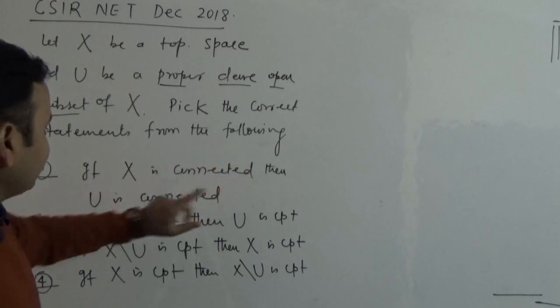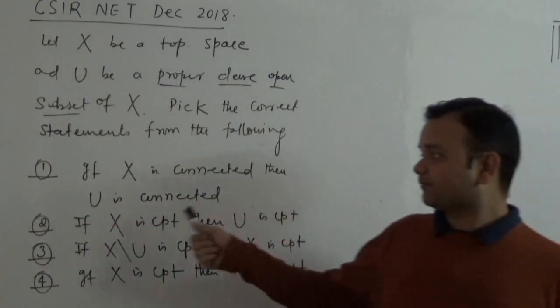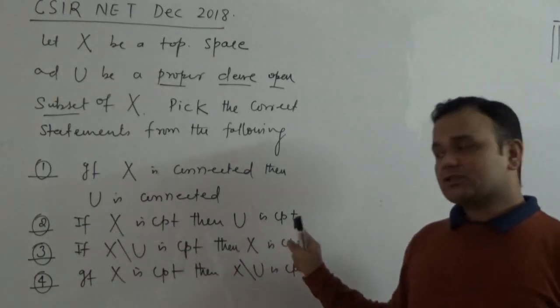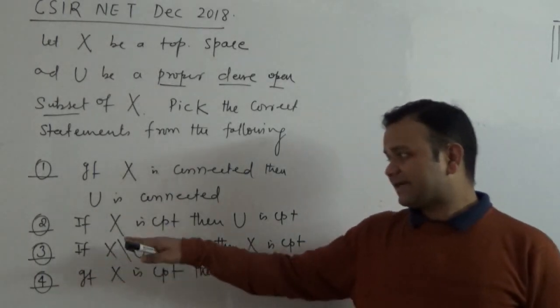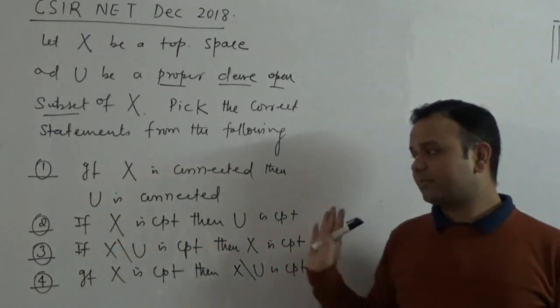First, if X is connected, then U is connected. Second, if X is compact, then U is compact. And third, if the complement of U in X is compact, then X is compact.